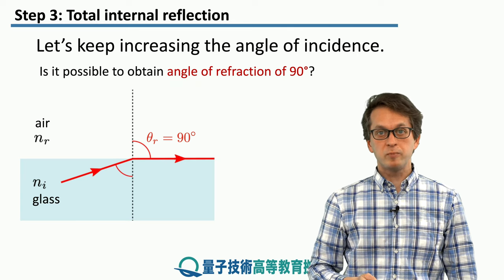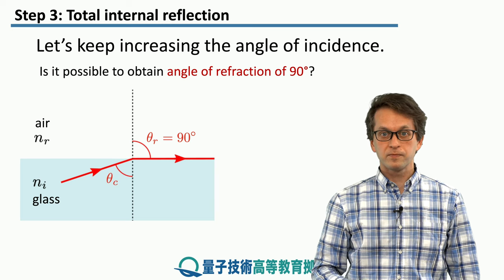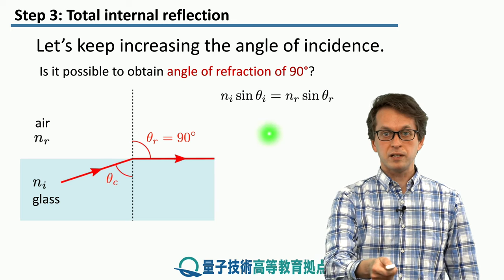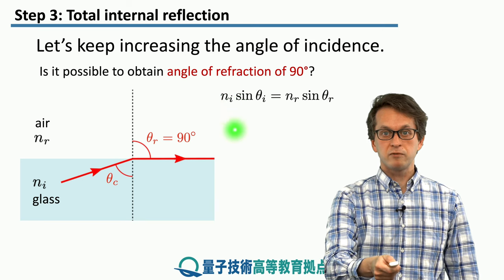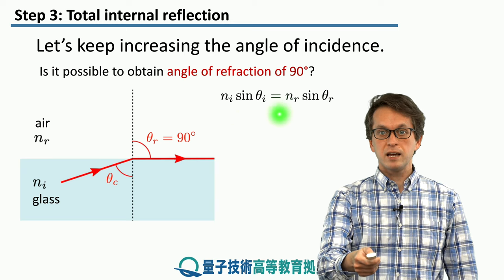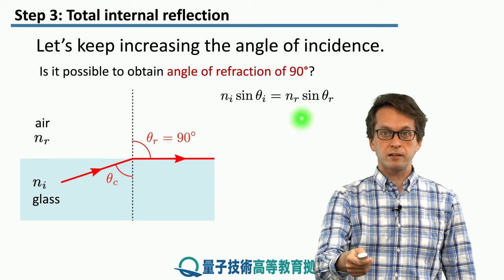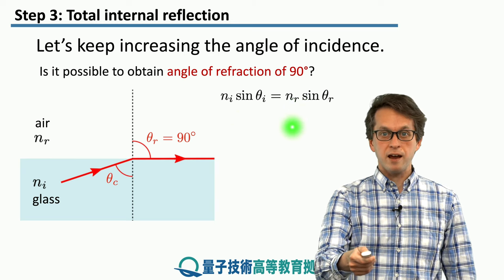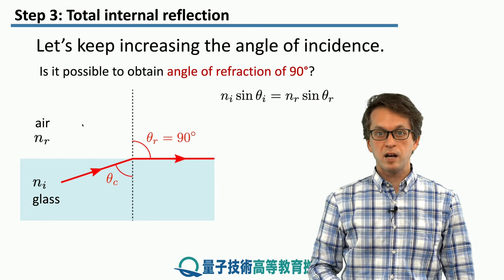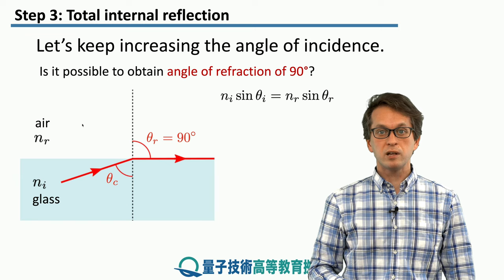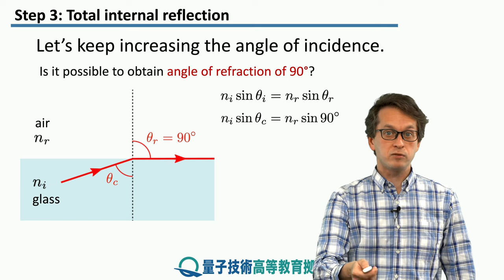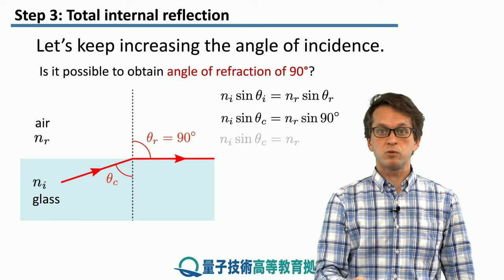So let's now compute this angle using Snell's law. We have that ni, the refractive index of glass, times the sine of the angle of incidence is equal to the refractive index of air, nr, times the sine of theta r. But we know that here we are looking for the scenario where the sine of theta r is just sine of 90 degrees, which is equal to 1.